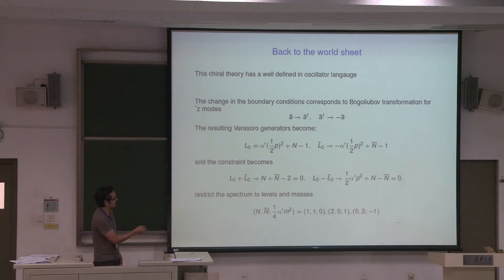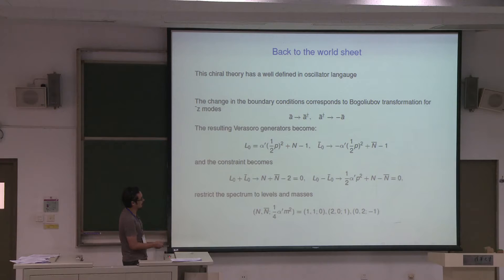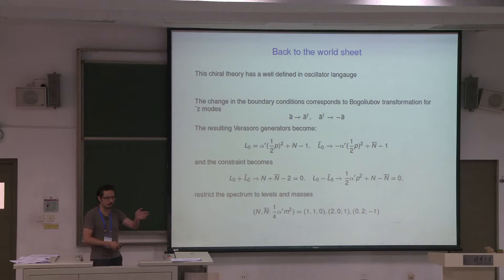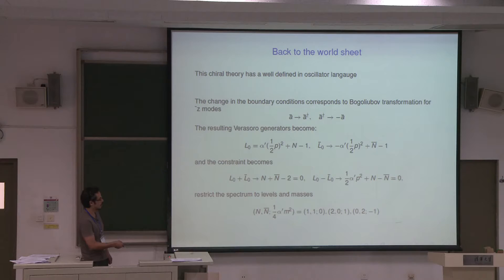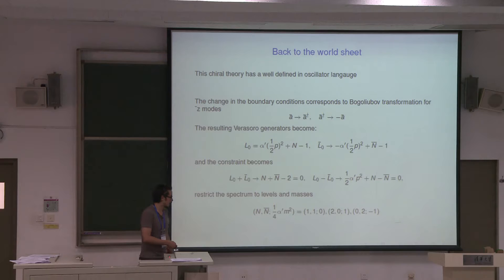On the Virasoro generators, you get an extra minus sign on L-bar because of this extra minus sign. The usual L_0 plus L_0-bar equals zero condition, which originally gives the mass-level relation, now becomes a constraint on the level: n plus n-bar has to equal 2. And the level matching condition now tells you what the mass is. These two conditions have their roles flipped. For the bosonic string, satisfying these two conditions gives three different states: the massless states, the massive spin-2 state, and the tachyon state.